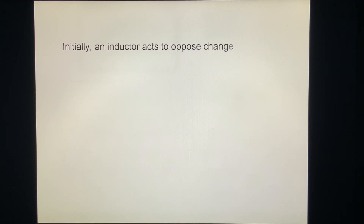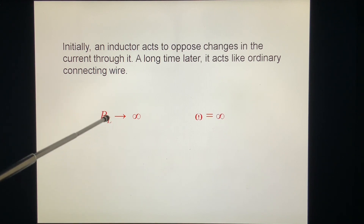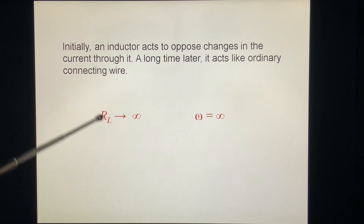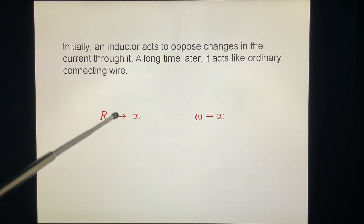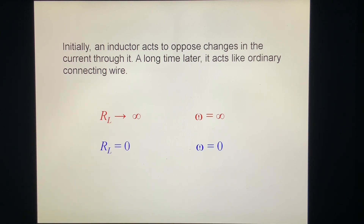Initially, an inductor acts to oppose changes in current through it. A long time later, it acts like an ordinary connecting wire. So at the beginning, when the current changes very fast — omega is large — the effective resistance is infinity and I is zero. For a long time after, it looks just like a wire and its resistance approaches zero compared to other resistances.